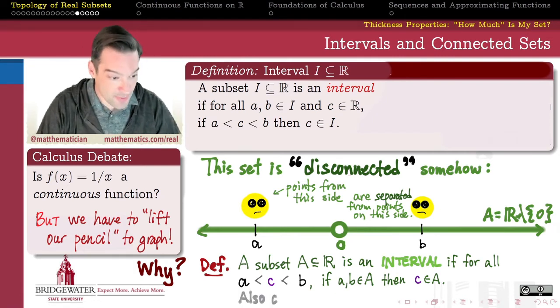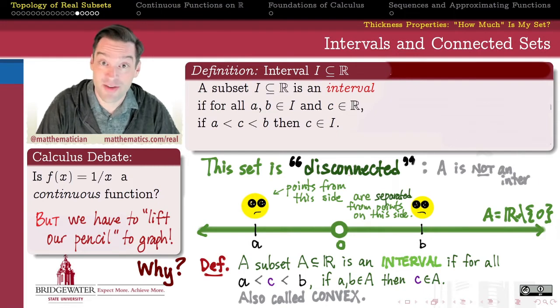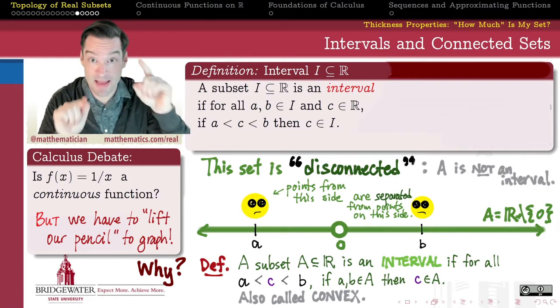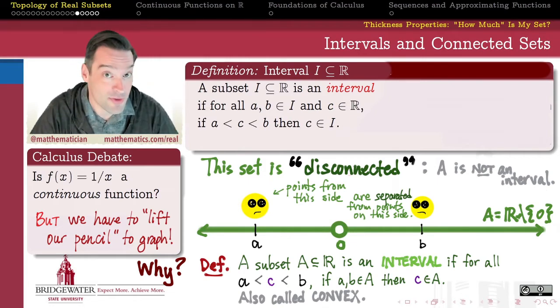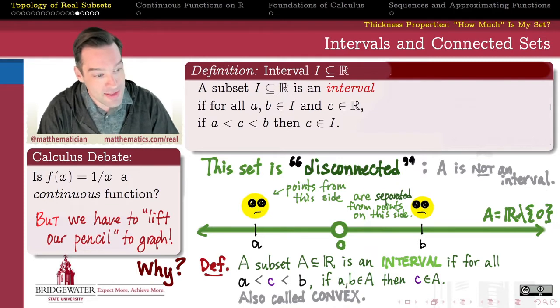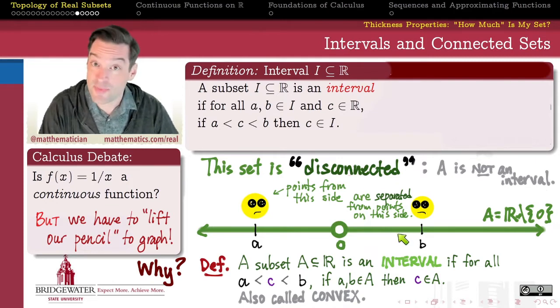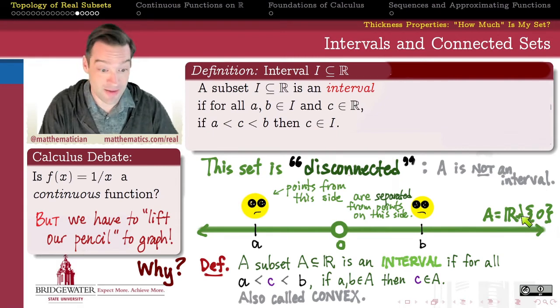This is a simple example of a more general notion in geometry called convexity. A convex set in geometry is one where if you contain any two points, then you also have to contain the entire line segment joining those two points. So a star shape is not convex, for example, but a circle is. And so this set, the domain of my reciprocal function, the real numbers minus zero, is not an interval.